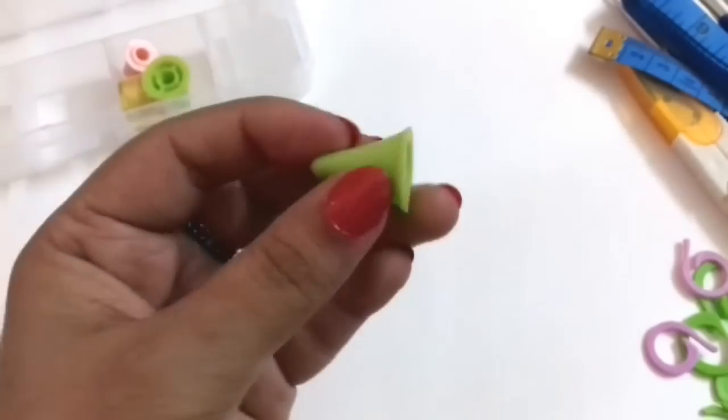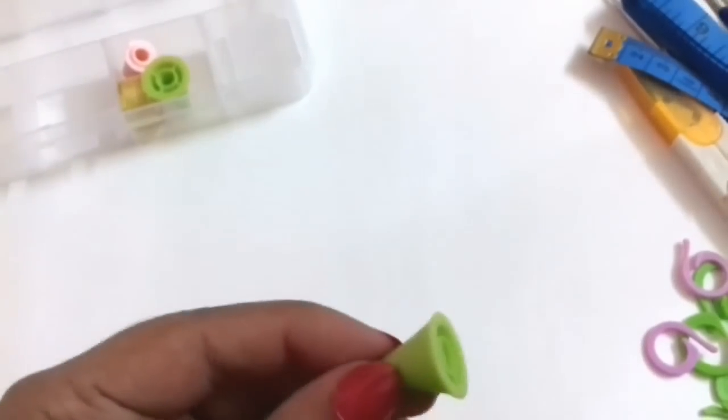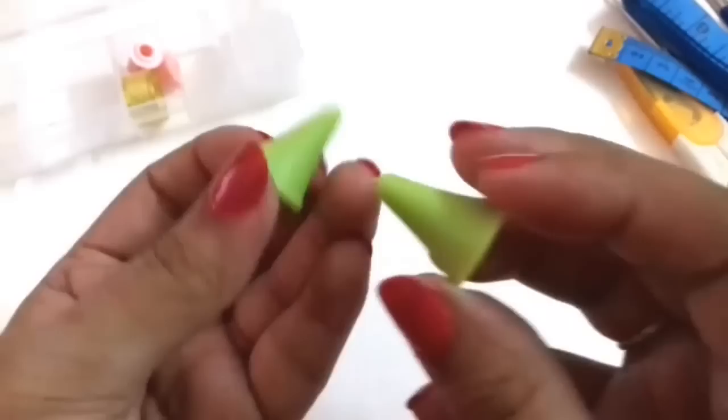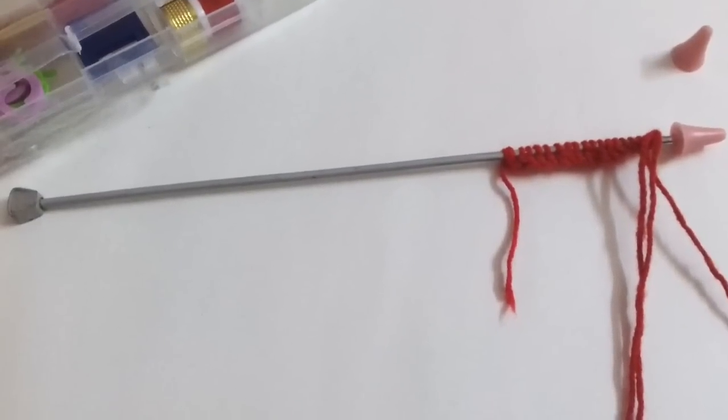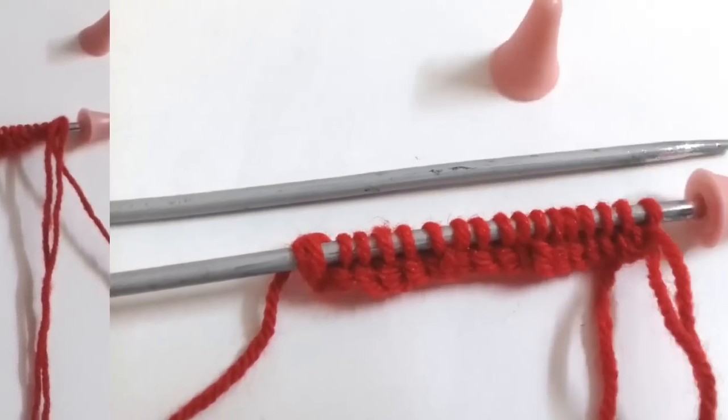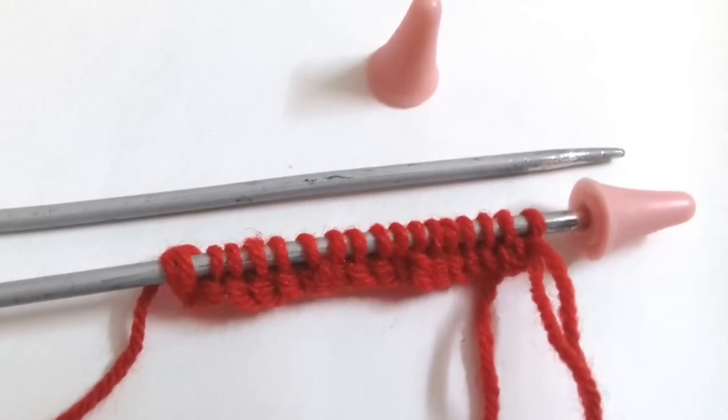Next, these are stoppers. They are also in two sizes, two small and two big, and they are used in knitting. If you make stitches and leave the needle, the stitches will slip out. So these can be very helpful. This way you can fit them on the needle. It will prevent your stitches from falling off the needle.